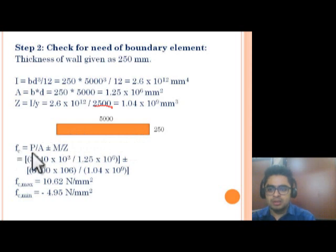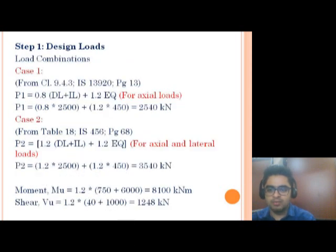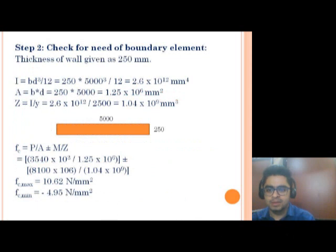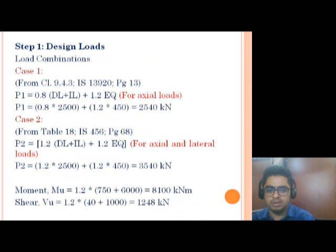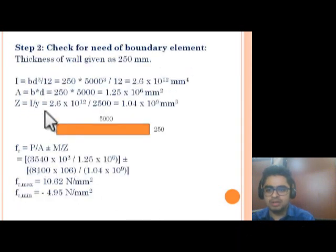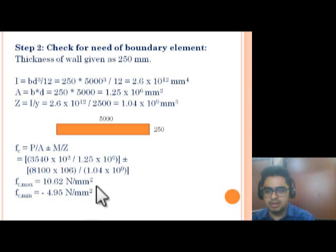To find the stresses, the formula is P/A ± M/Z. We consider the maximum P value from both cases (2540 and 3540), so P = 3540 kN. Area = 1.25 × 10⁶ mm². The factored moment from Step 1 is M = 8100 kN·m, and Z is the section modulus. For maximum stress: FC_max = P/A + M/Z. For minimum stress: FC_min = P/A − M/Z.